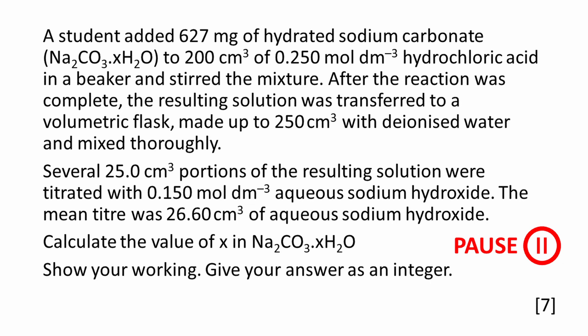A student added 627 milligrams of hydrated sodium carbonate to 200 cm³ of 0.250 mol dm⁻³ hydrochloric acid in a beaker and stirred the mixture. After the reaction was complete, the resulting solution was transferred to a volumetric flask and made up to 250 cm³ with deionized water and mixed thoroughly. Several 25.0 cm³ portions of the resulting solution were titrated with 0.150 mol dm⁻³ aqueous sodium hydroxide. The mean titre was 26.60 cm³. Calculate the value of X in Na₂CO₃·XH₂O. Show your working and give your value as an integer.